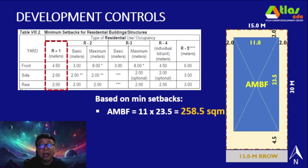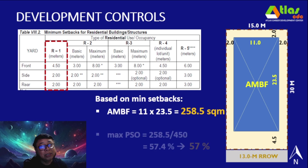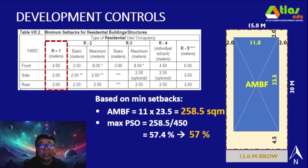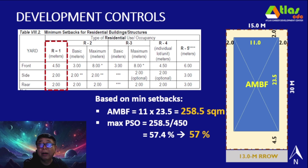Converting that to its percentage equivalent for the maximum PSO: divide 258.5 by the total lot area of 450, and you get a maximum PSO of 57.4%, rounded down to 57%.